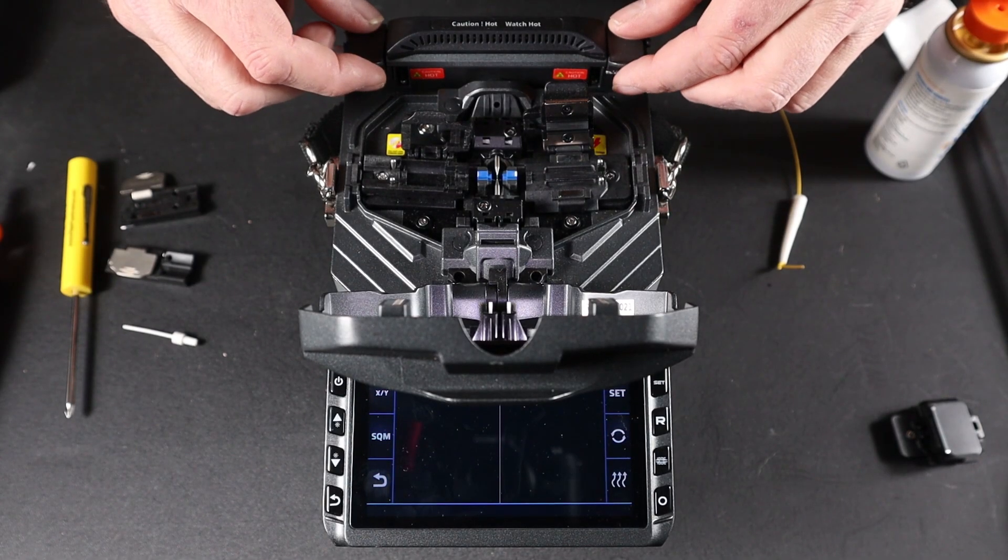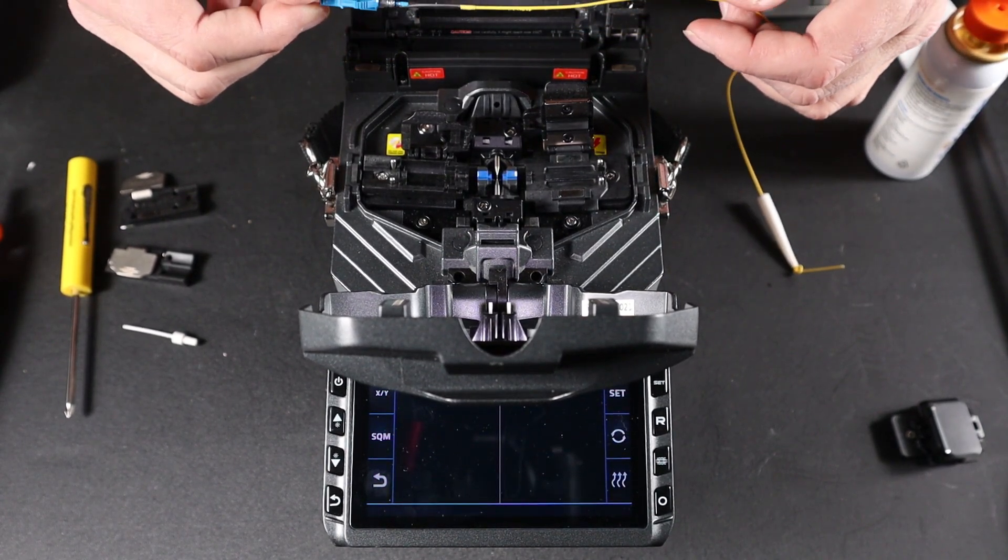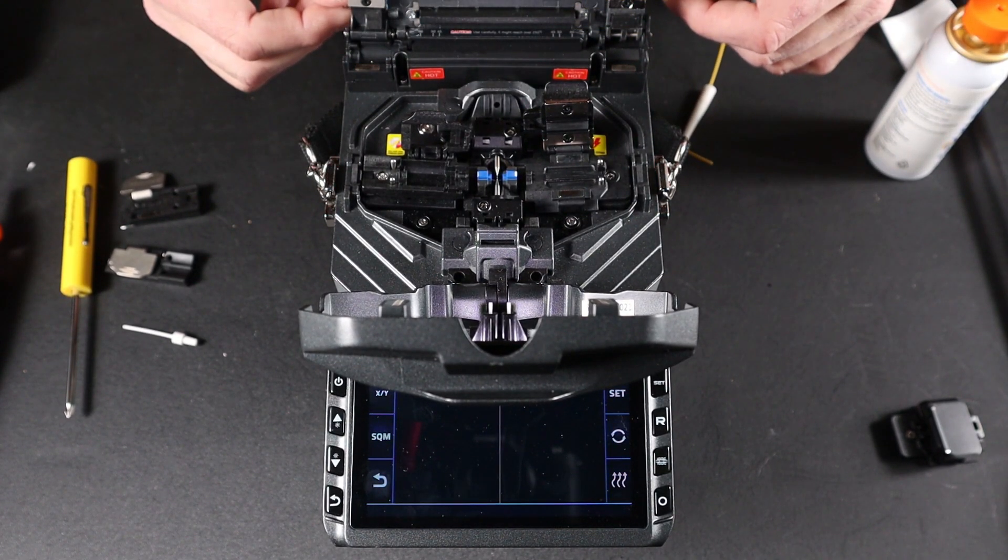Once it's gone out, open your oven. Remove your connector. And place in the cooling tray.